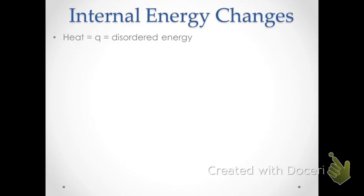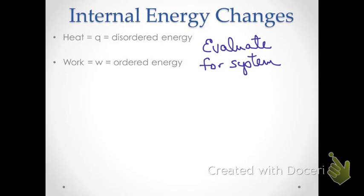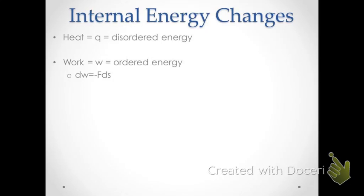Let's look at different types of energy associated with changes in internal energy. There is heat, represented by the symbol Q, which is a disordered, random form of energy. And then there's also work, which is an ordered form of energy. From physics, work equals force times distance. In differential form, an infinitesimal amount of work equals negative external force times the distance traveled.